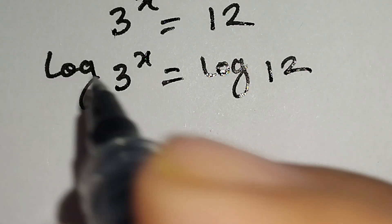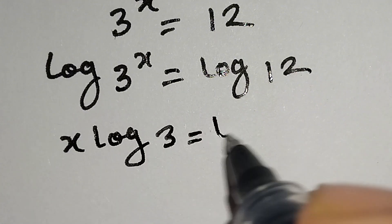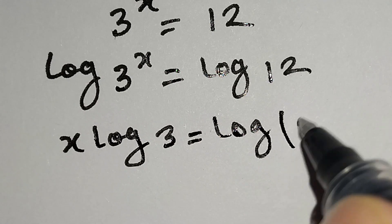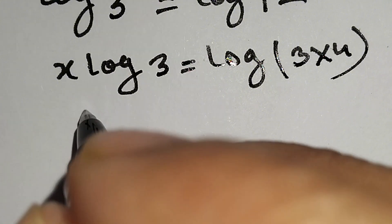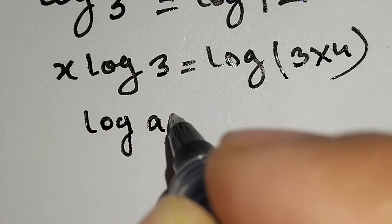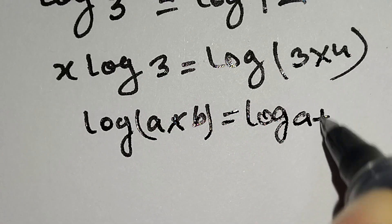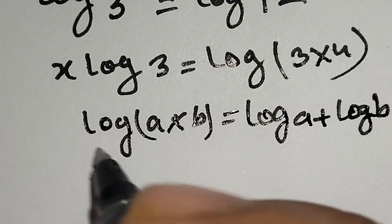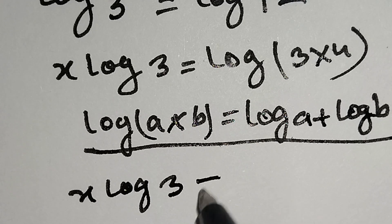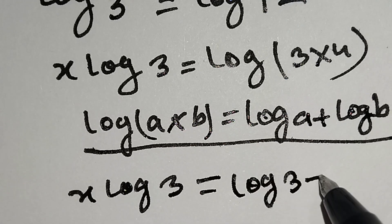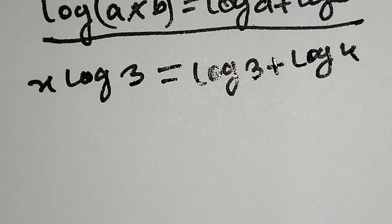According to the log power formula, we can write this line as x·log 3 is equal to log 12. Since 12 is equal to 3 times 4, and we know log(a × b) = log a + log b, according to this formula we can write: x·log 3 is equal to log 3 plus log 4.